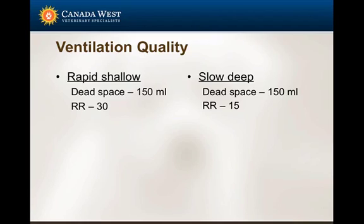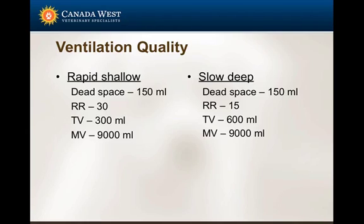Every breath this patient takes, 150 mils of that is wasted ventilation — it's just ventilating dead space, not contributing to gas exchange at all. Now if we look at these two patients: the one breathing rapidly and shallow is doing 300 mils per breath; the slow deep patient is doing 600 mils per breath. If we multiply that through and calculate the minute ventilation — the amount of air exchanged in a minute — they're exactly the same.